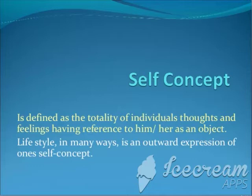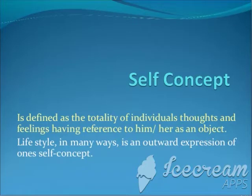Now how does self develop? It basically develops from your interaction with the significant people in your life — your parents, your friends, your neighbors, your relatives, your teacher. All these are important people in your life. If they tell you something, it stays with you and you start thinking in that direction: am I like that? Why do they keep mentioning me like that? So all that impression stays on with you, and you organize that experience about who you are.